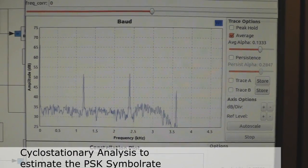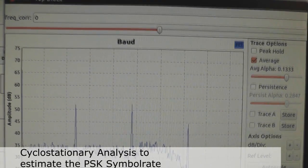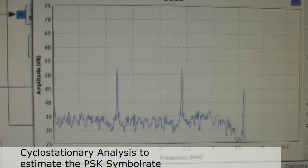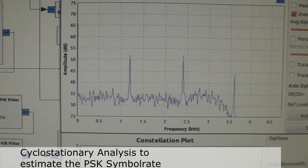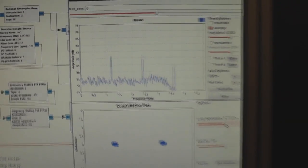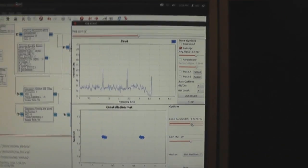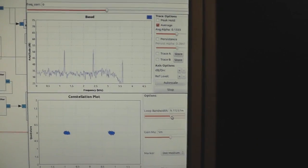And what we do here is a baud rate estimation. And we see here the first peak is at 1.2 kHz, which corresponds to the data speed of 1200 bauds.